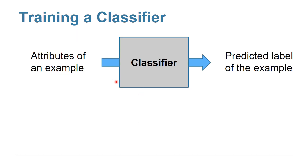Recall that a classifier takes an example like an image and predicts something about it. So let's say that we want to predict whether the image has a cat or not — the classifier will tell us whether the image has a cat or not. We have two classes: one if it has a cat and zero if it doesn't, or for an email whether it is spam or not.